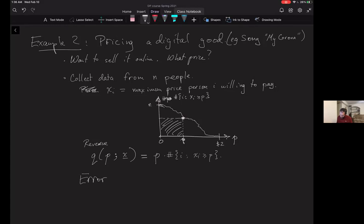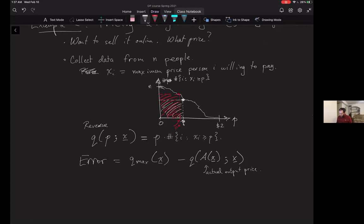You're trying to make as much money off the song as possible because that microphone you bought wasn't cheap. You want the error, your notion of error, to be the difference between the best revenue you could get, call that Q_max, so Q_max(X) minus whatever your algorithm outputs. This is the actual output price.